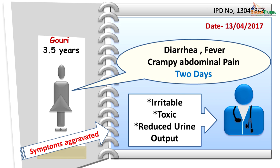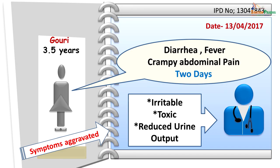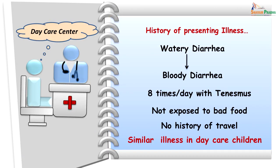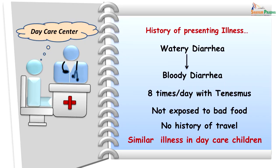The symptoms really got aggravated and that was when the parents brought her to the hospital, as the child was becoming irritable and toxic, and she also had reduced urine output. The parents told us that Gowri was going to a daycare center, and one day they had a call saying she was not keeping well. The illness initially started with watery diarrhea which turned bloody, and the frequency of motions was more than eight times per day.